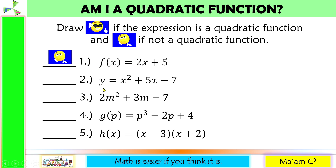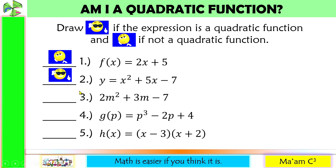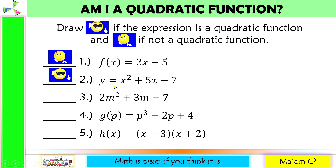Next, we have the dependent variable, equal sign, and the independent variable with highest exponent 2 — so yes, this is a quadratic function. Then we have a variable raised to the second power, but there is no dependent variable and no equal sign, so this is just an expression, not a function.